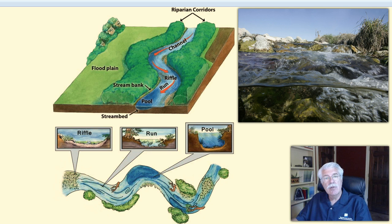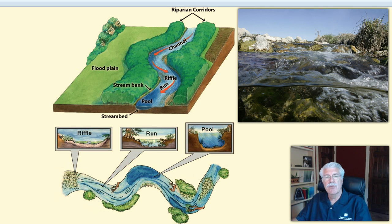In naturally flowing streams it's common to see riffle, run, pool, run, riffle sequences — this is alternating slow and fast moving water. It makes great homes for aquatic life and creates diversity. It recreates an effect we call an edge effect — the edge between a riffle and a run, and a pool and a riffle.